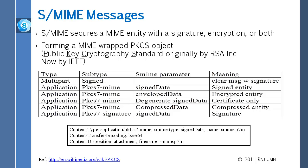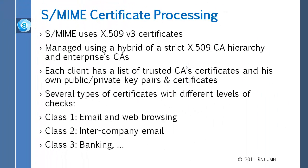S-MIME uses X.509 certificates, and supports a hybrid approach including enterprise certificate authorities. For example, a company like IBM doesn't need to go to a commercial CA and pay per certificate — they can issue their own certificates internally. Each client has a list of trusted CAs. There are several certificate classes with different authentication levels: Class 1 for email and web browsing, Class 2 for inter-company mail, and Class 3 for banking.